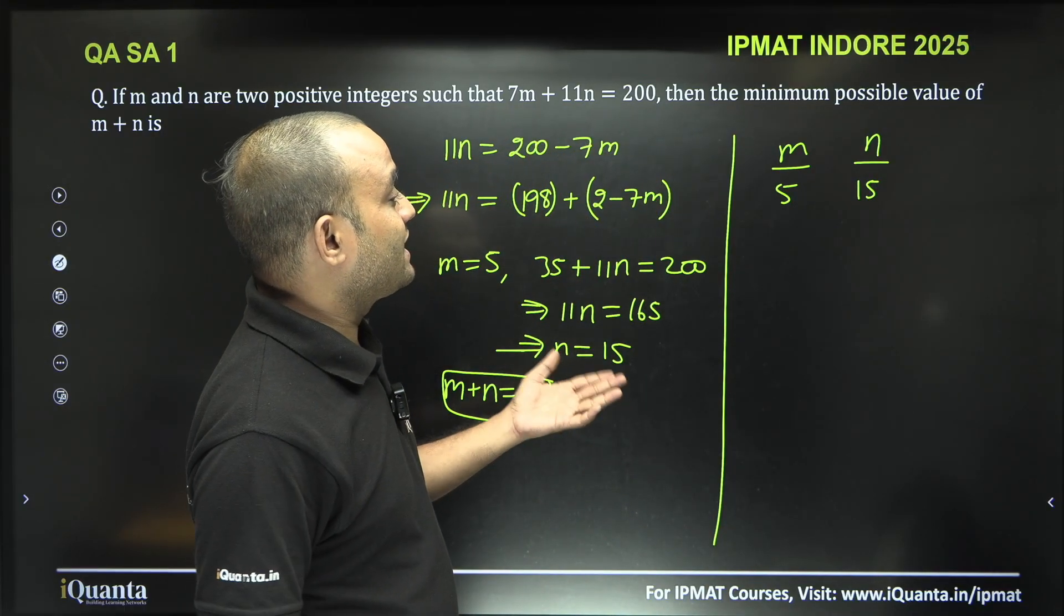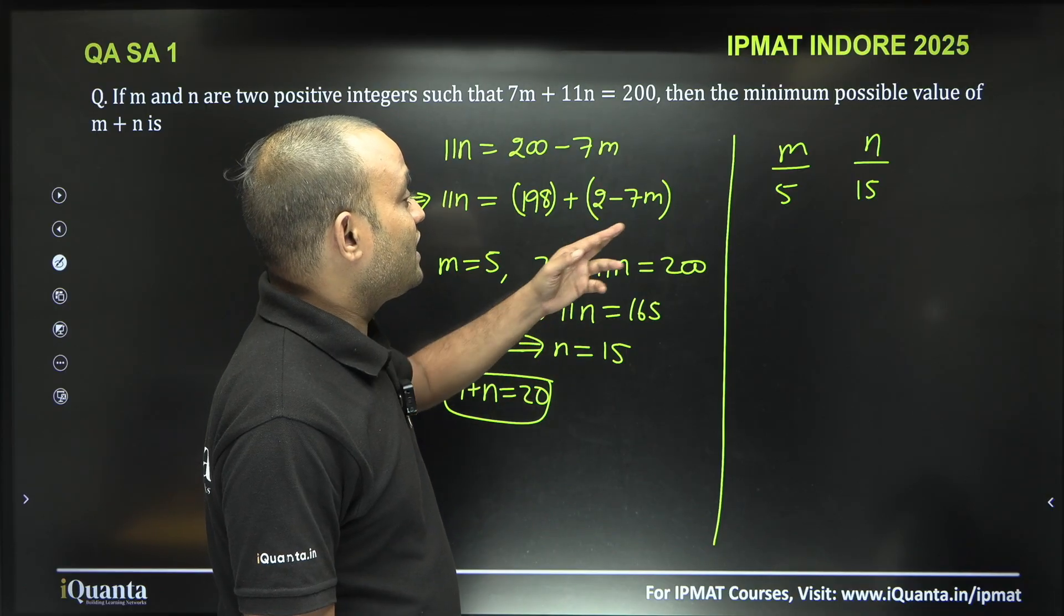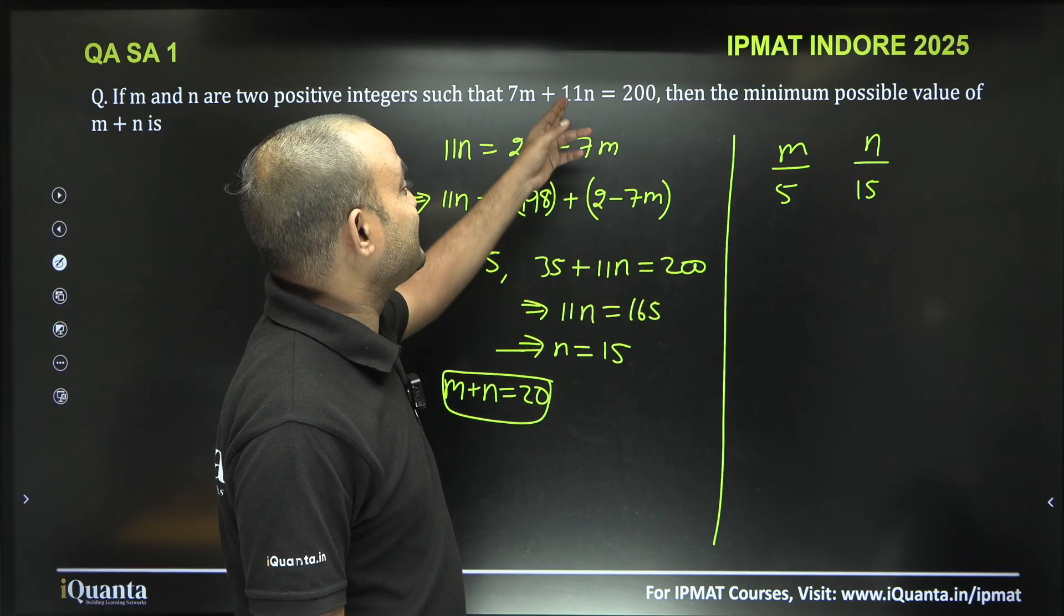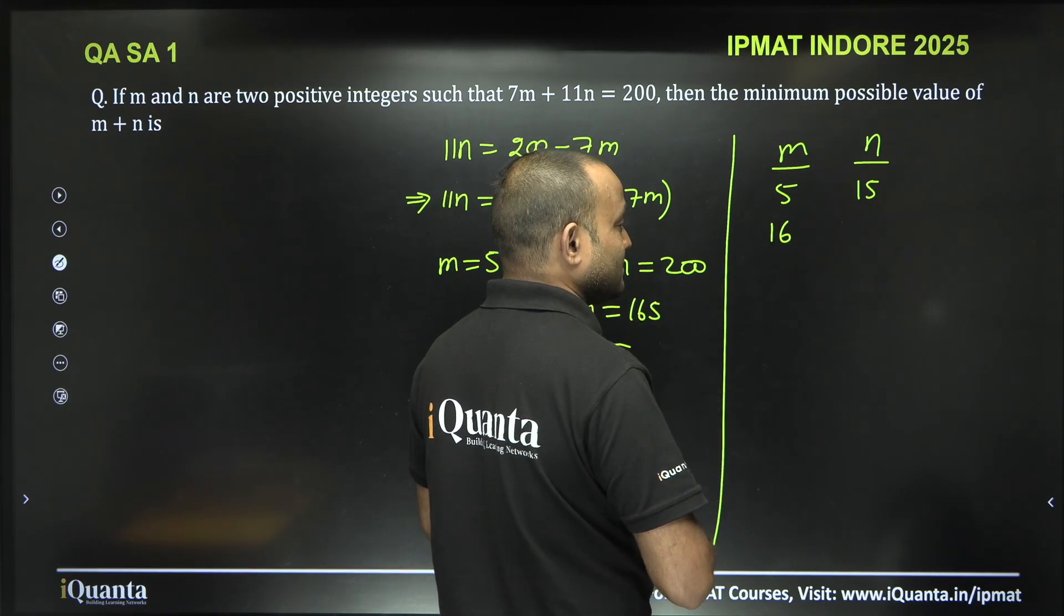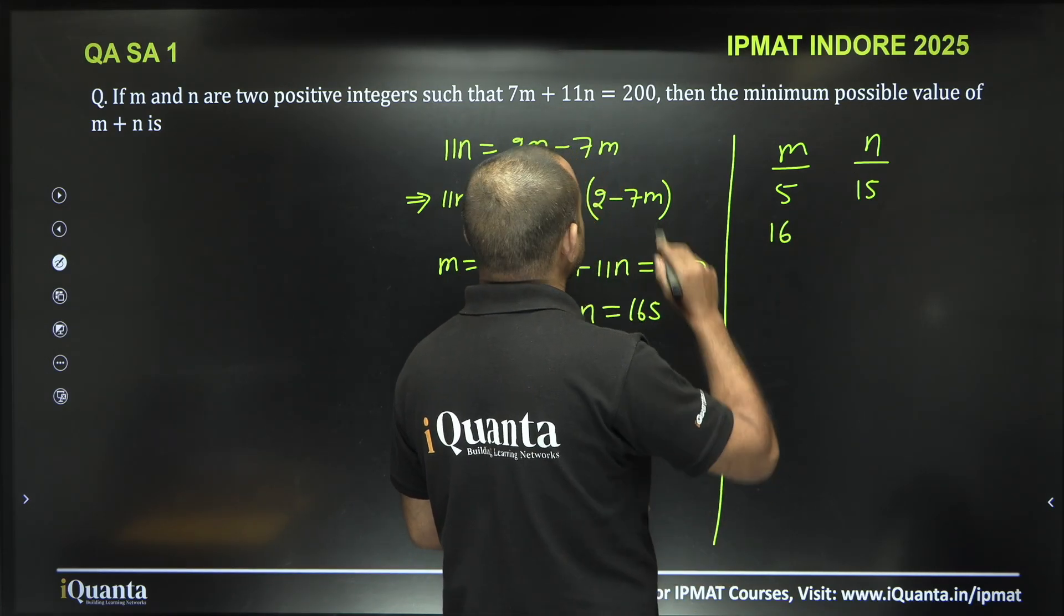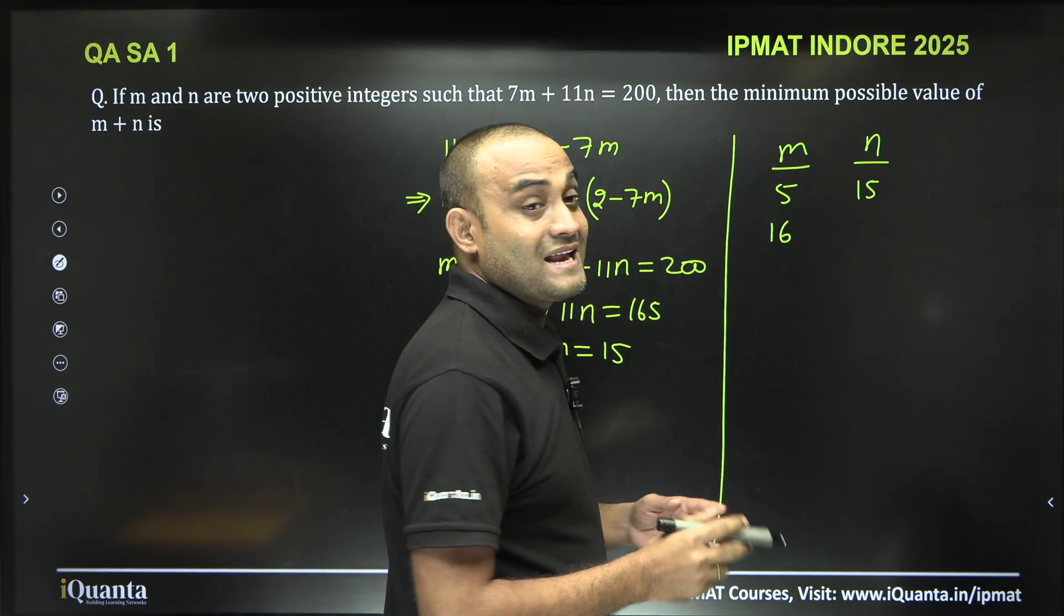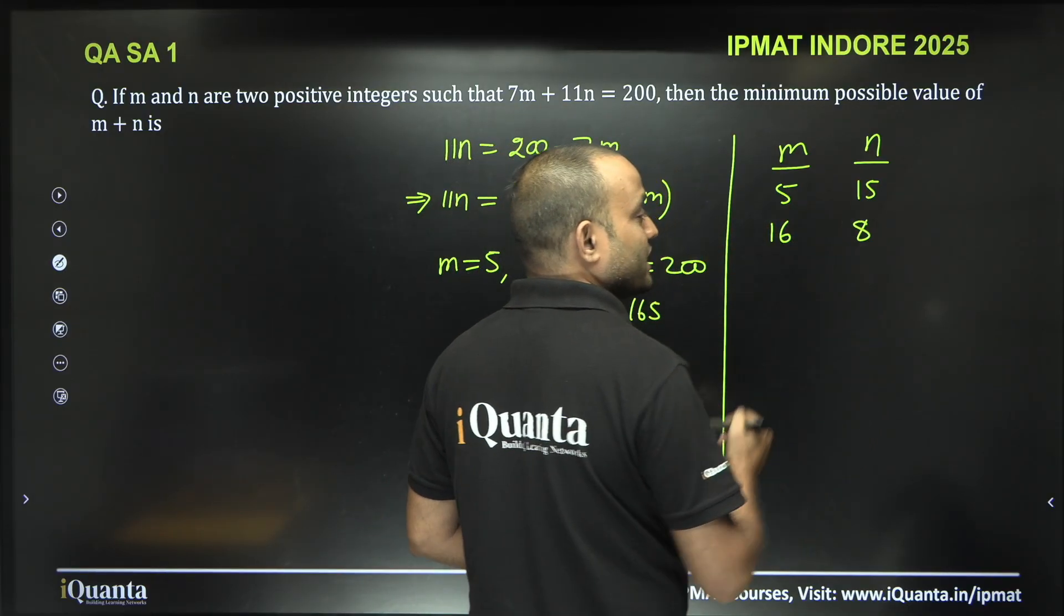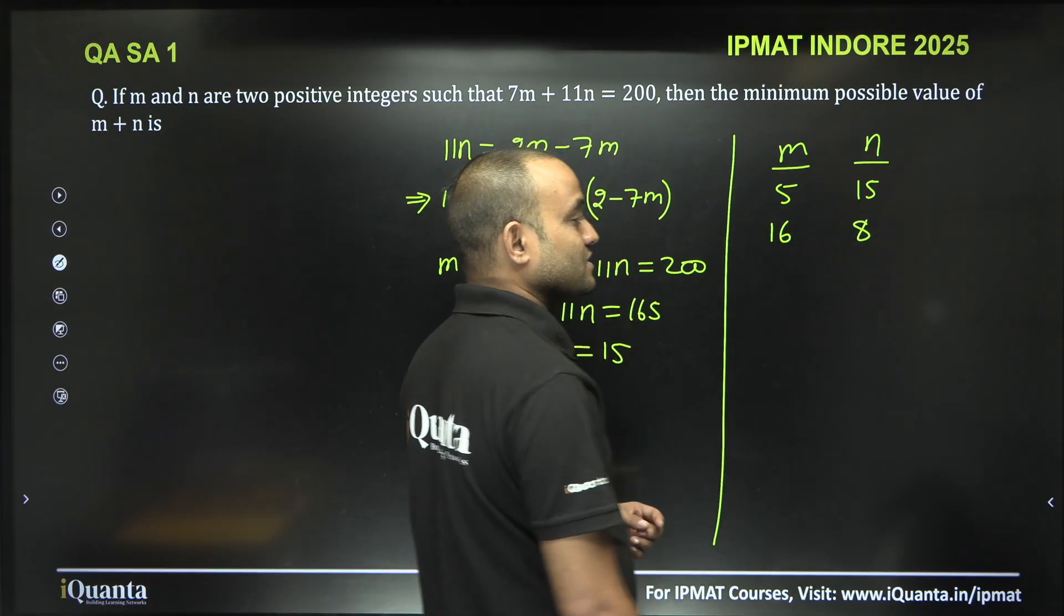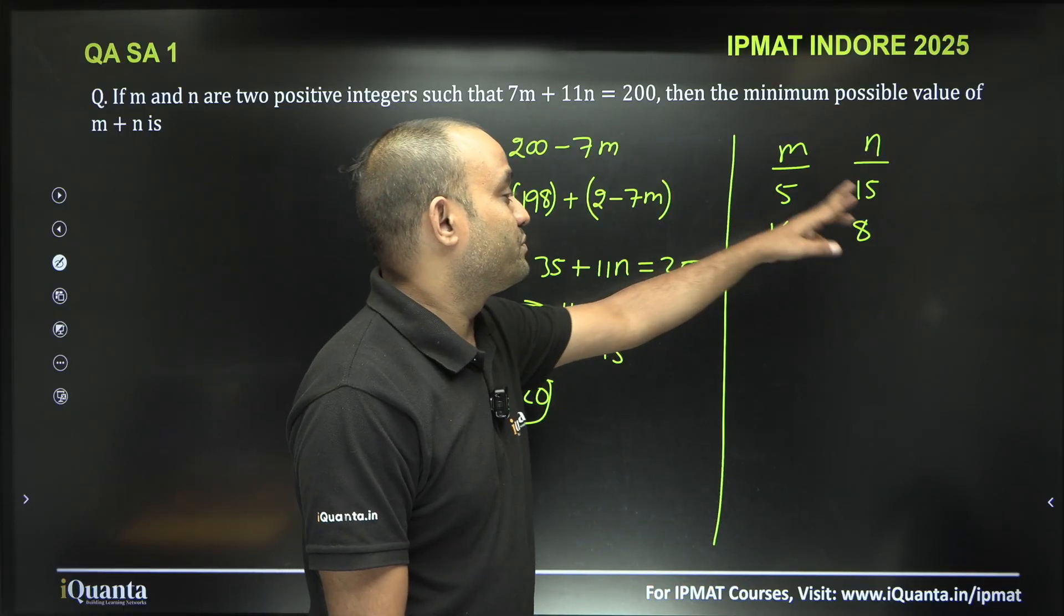Now next value of m and n, what will happen? Value of m, if I increase it with the coefficient of n, so this will become 16, and the next value of n will decrease with the coefficient of m, this will become 8. So 16 plus 8 is 24 which is bigger than 20.